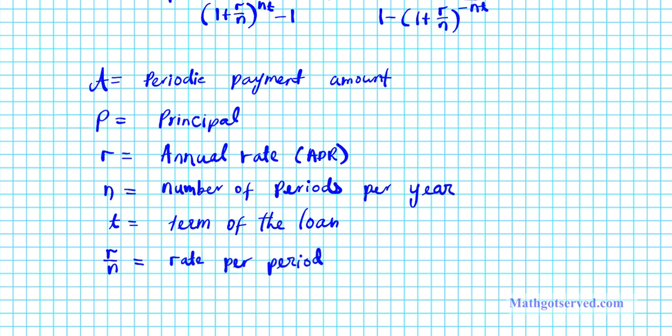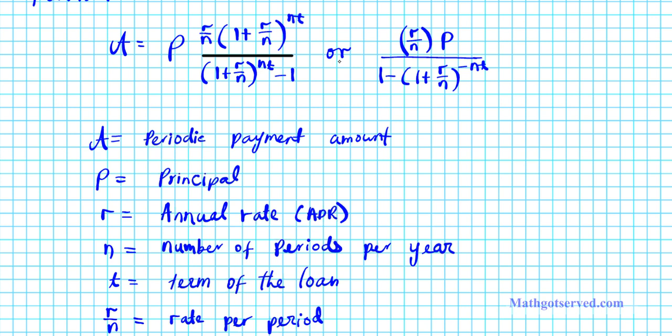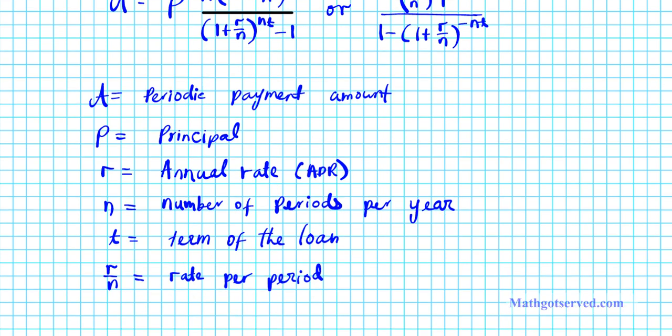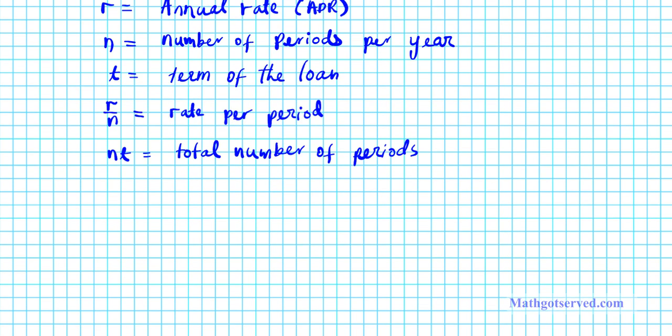So R over N is rate per period. And then something else that shows up, combination of two variables is NT, NT, NT here. What does NT mean? NT is basically the total number of periods. So remember, N is the number of periods per year, and NT is the total number of periods for the entire duration of the loan. All right, let's keep all those pieces of information in mind. Now let's apply it to an example.